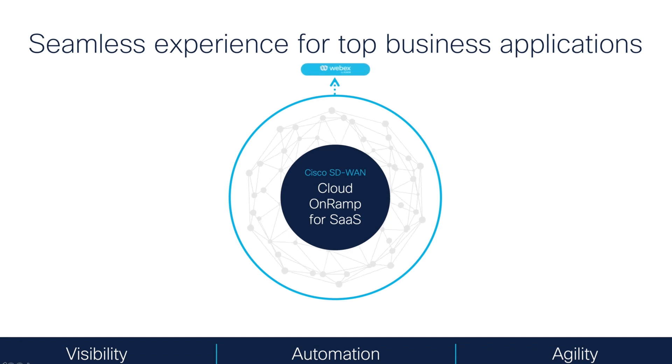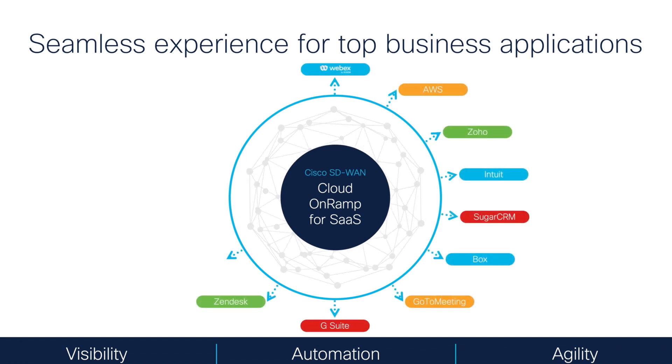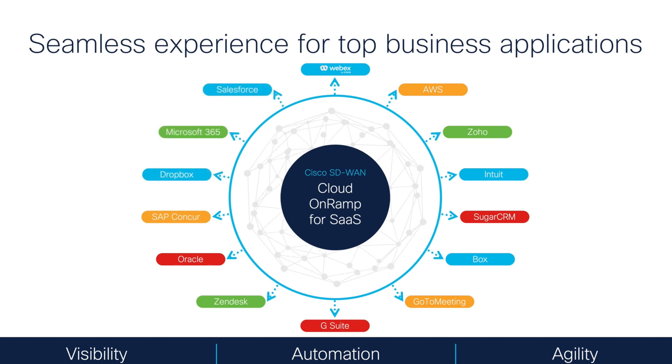The end result is a seamless Microsoft 365 user experience through path optimization, deeper analytics, and policy automation. In summary, cloud on-ramp for SaaS is an automated and holistic solution supporting not just WebEx and Microsoft 365, but also a number of top business applications like Salesforce, Google Workspace, Oracle, Box, and more to provide a seamless customer experience.